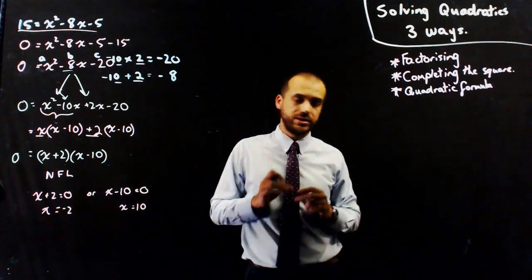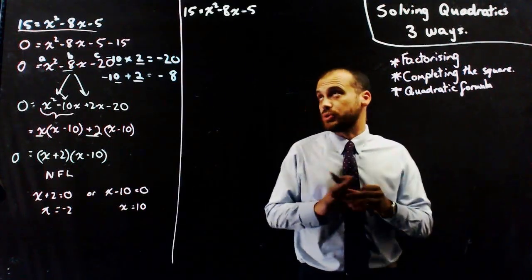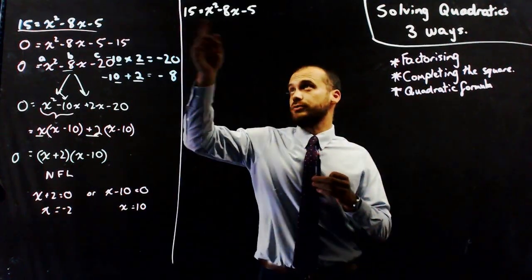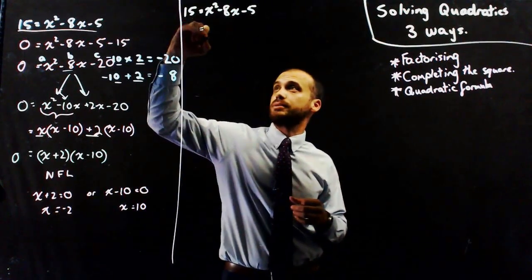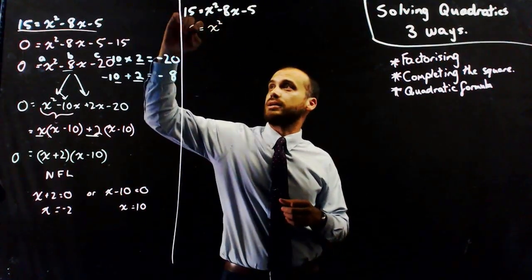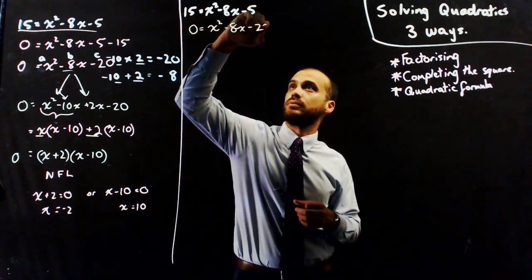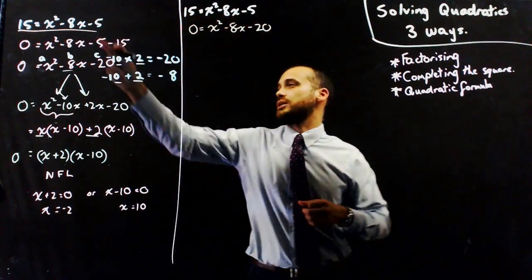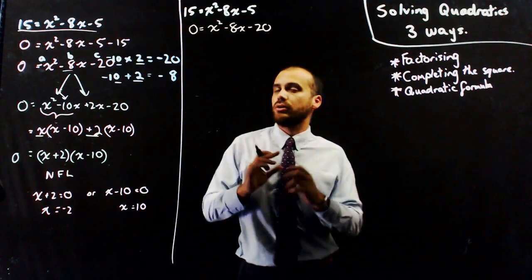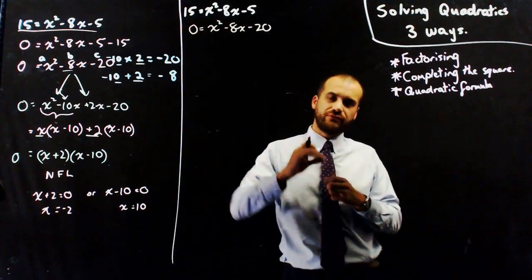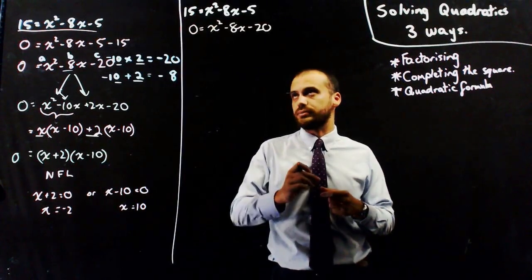There are two other ways to solve this. So this time I'm going to complete the square. Same question: 15 equals x squared minus 8x minus 5, and the first step is still the same — I need to make it equal to 0. Completing the square is a very formulaic, very algorithmic way of doing it.